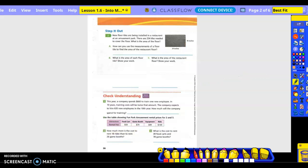Step it out. Number 2. New floor tiles are being installed at an amusement park. There are 254 tiles needed to cover the floor. What is the area of the floor? So how can you use the measurements of a floor tile to find the area of the restaurant floor? You're going to find the area of the floor tile first, which is 24 times 18, and then take that times 254. I put parentheses around that so you do it first.